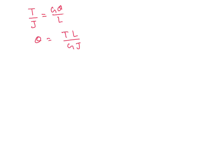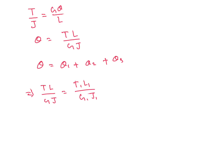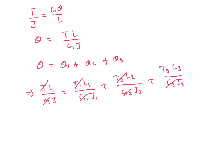For series connection of shafts we know: theta equal to theta1 plus theta2 plus theta3. So T into L by G J equal to T1 L1 over G1 J1 plus T2 L2 over G2 J2 plus T3 L3 over G3 J3. From here, since the material is same, G cancels, and torque also cancels as the same torque acts throughout.